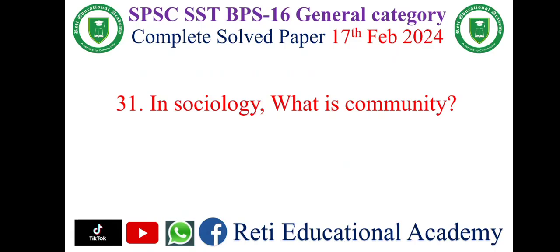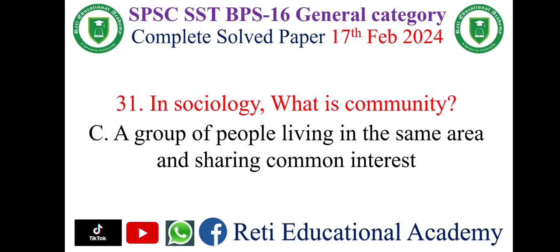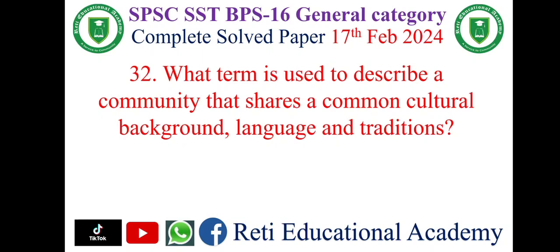Question number 31: In sociology, what is a community? The correct answer is A — a group of people living in the same area and sharing common interests. Question number 32: What term is used to describe a community that shares a common cultural background, language, and traditions? The correct answer is...